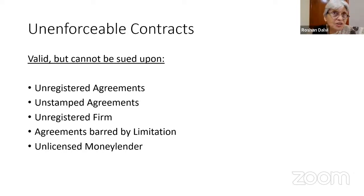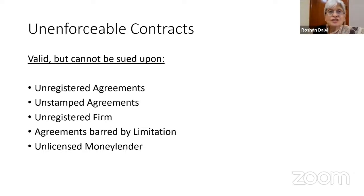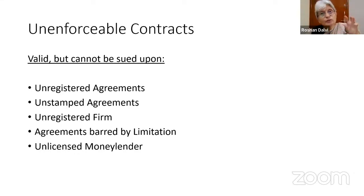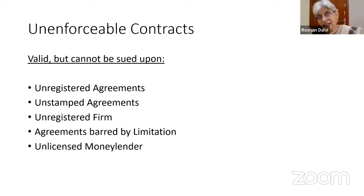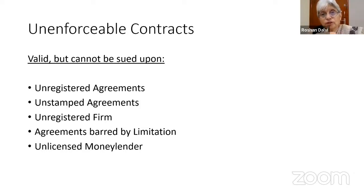Every partnership firm is required to be registered under Section 69 of the Partnership Act. If the firm is not registered, then an unregistered firm cannot sue — it can be sued, and the partners can sue one another, but you cannot sue a third party. It would be an enforceable contract, but you have to register your firm first and then sue. Then, agreements which are barred by limitation — when the usual monetary period expires and payment has not been made, can you sue on that agreement? It becomes unenforceable.